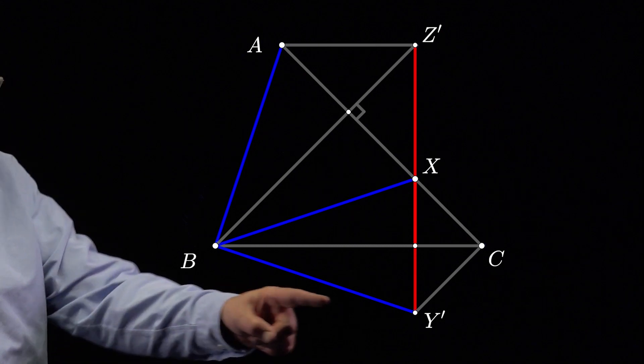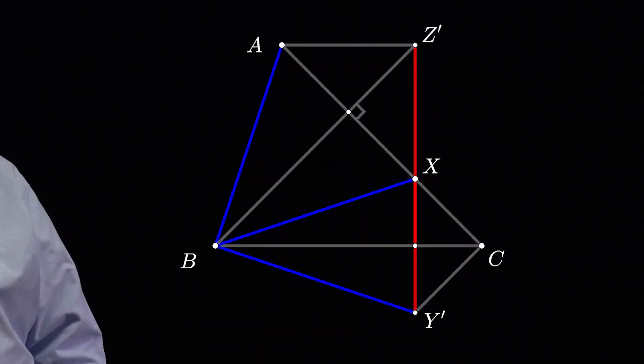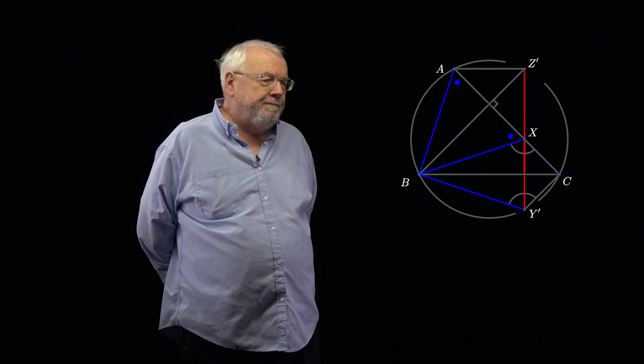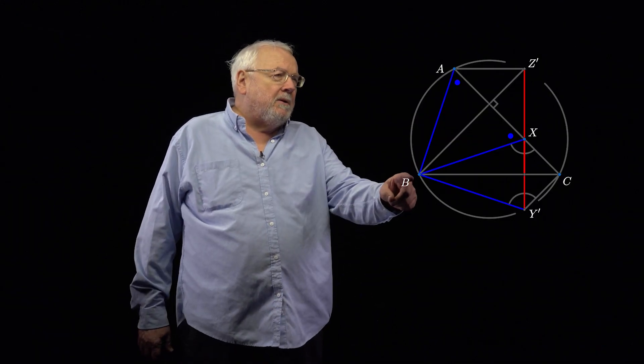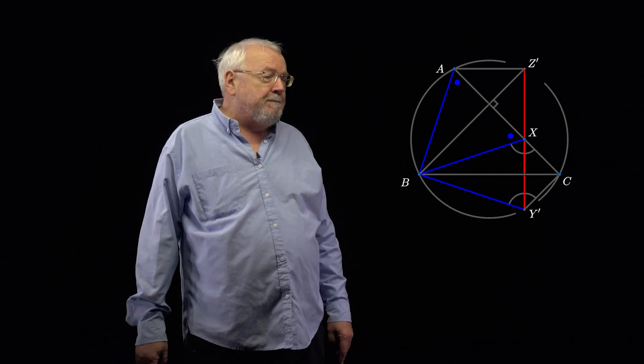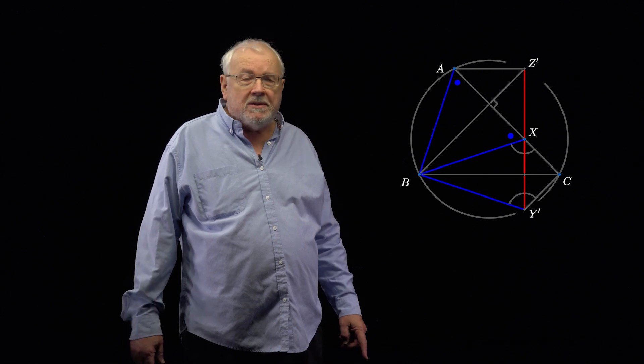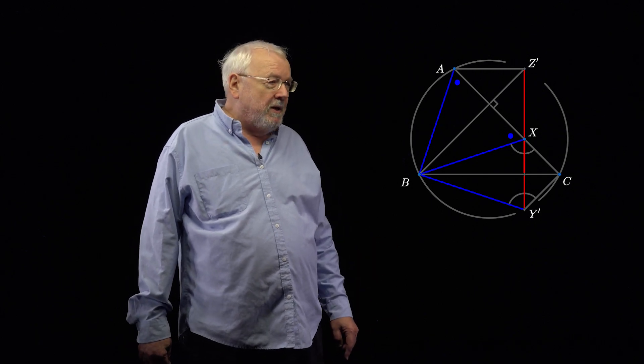Now, you draw the line Y'X up until it meets that perpendicular bisector and that's where you locate the point Z'. The points Y' and Z' have aspirations. They dream that one day they will become Y and Z. And our job is to show that that happens. Now, this triangle BAX is isosceles, so its base angles are equal and I've written dots to indicate the equality of those two angles.